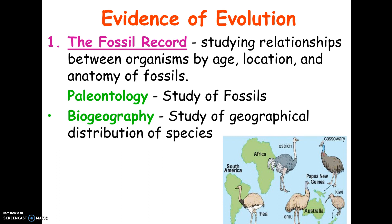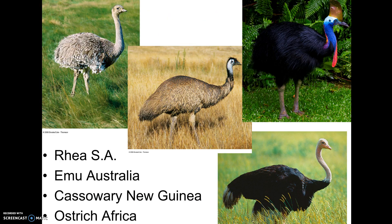I have a picture in the corner to illustrate biogeography. The ostrich, the rhea, the cassowary, the emu, and the kiwi are five flightless birds that we believe came from a common ancestor. Over time, they became separated from one another, perhaps when Pangea broke up, and each of them lives on a different continent today. You can kind of see the relationships between them.